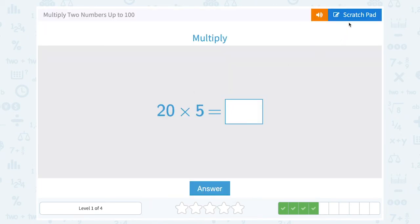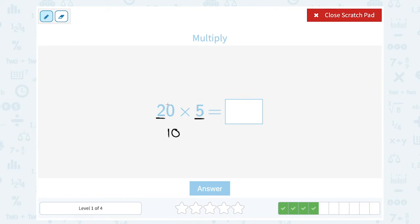20 times five. This ends in a zero, so we can use some mental math here. I can think of this as two times five, and then just put an extra zero on my answer. So two times five would give me 10. Since I was multiplying by 20 and not just two, I would need to add an extra zero. That's going to give me 100.